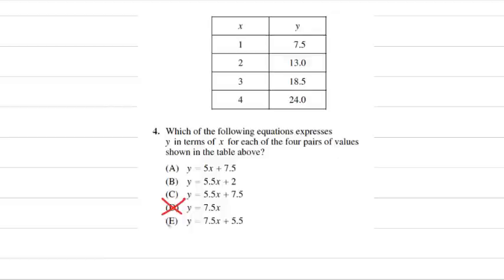I know choice E is not going to work because for 1, we should get 7.5. And if I put a 1 in right here, that's 7.5 plus 5.5, which is inevitably a number greater than 7.5. So I know that choice E won't work.